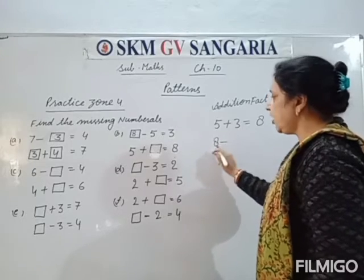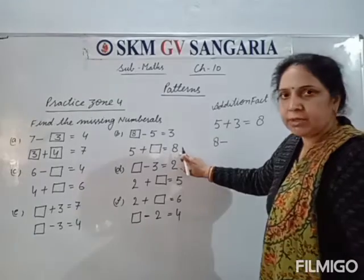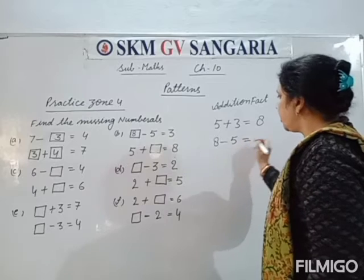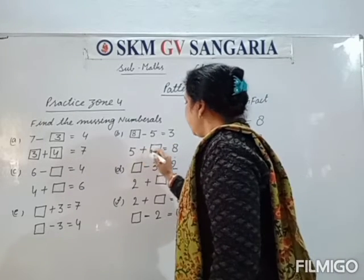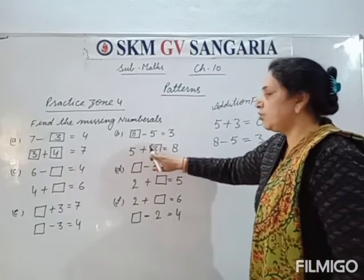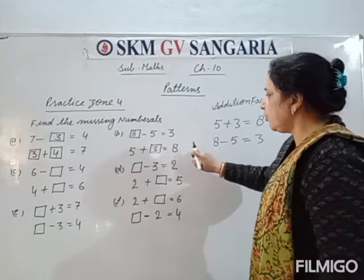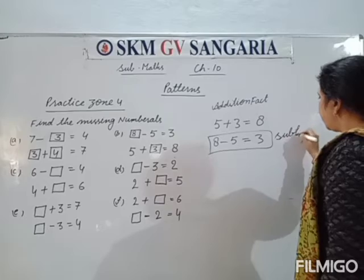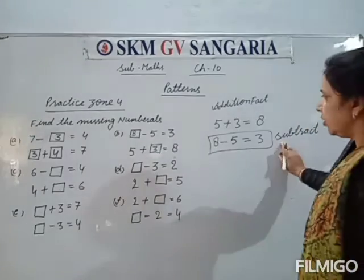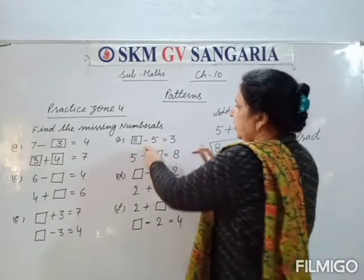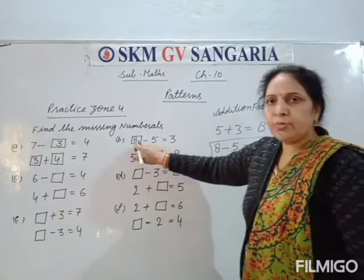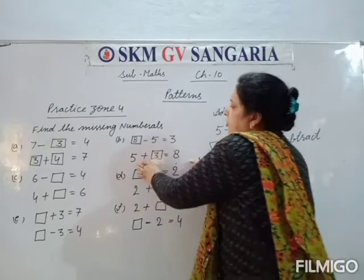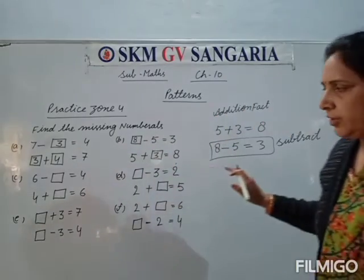Toh dekhe: 5 plus 3 is equal to 8. Bigger number — jo sum of two numbers hai — bigger number mein se agar hum smaller number ko subtract karenge, toh hume 3 milega. Toh 5 plus 3 is equal to 8 — yeh kaunsa fact hoga hamaara? Subtraction fact. Toh bigger numeral ko find karne ke liye hum addition fact ka use karenge, aur smaller numeral ko find karne ke liye hum subtraction fact ka use karenge.